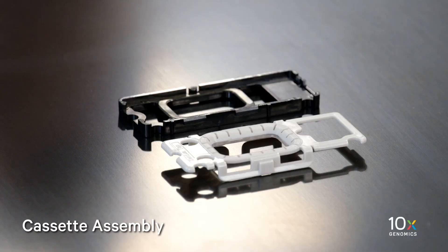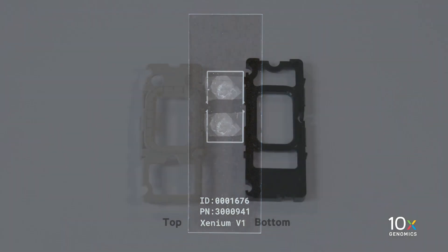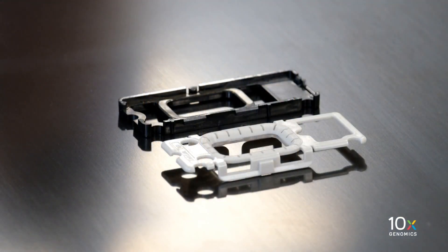First, we will demonstrate the Xenium cassette assembly. We have tissue in the imageable area on the slide. The slide has previously been prepared as part of the Xenium workflow. The Xenium cassette consists of two pieces, the top and bottom of the cassette. Place the top and bottom halves of the cassette on the bench.